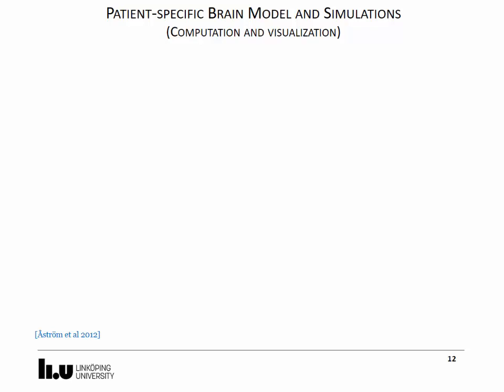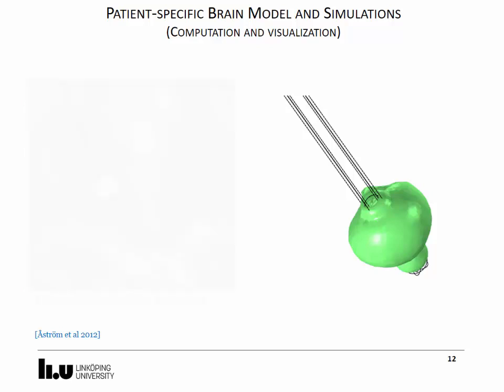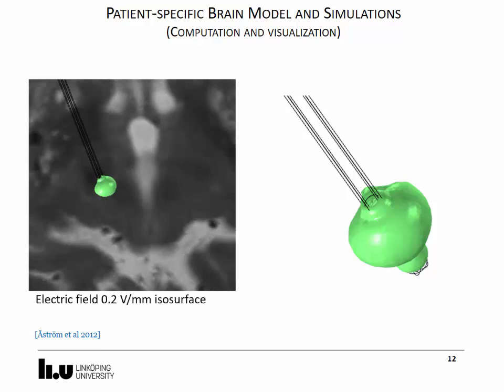Once the computation is run, the electric field may be visualized in different ways, as a surface plot as shown in the axial cut plane to the left or with isovoltage contours and surfaces. Our group uses a fixed isolevel of 0.2 volts per mm.